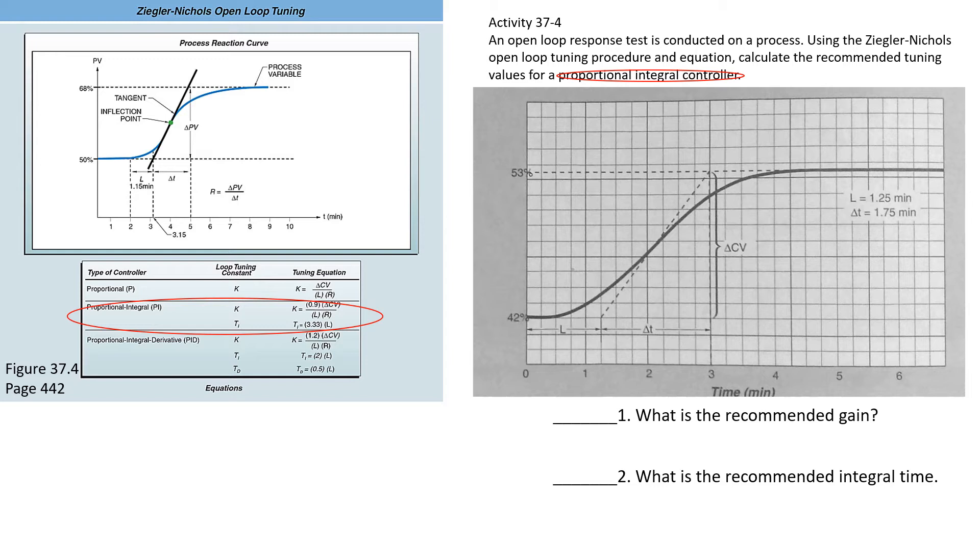What is the recommended gain? Gain is K, if you remember from the chapter. We're trying to find K. 0.9 is a constant we're given. Delta CV is right here, 53 and 42. L is given to us right here, and R is something we have to find. Delta PV over Delta T. Delta PV is the same as the Delta CV in this case—not always, but in this example it is.